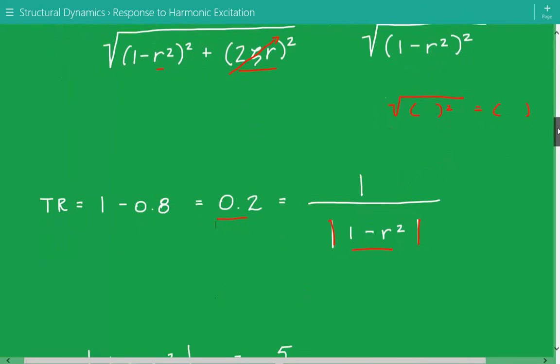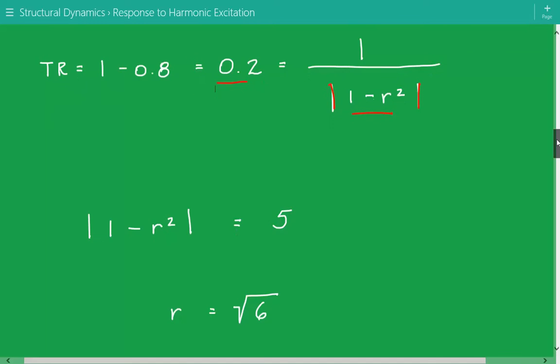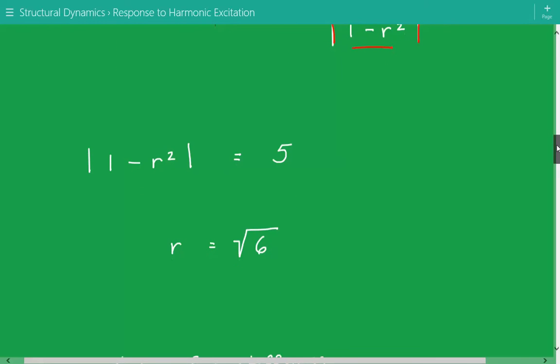So now we need to solve for r, and so what we get is the absolute value of 1 minus r squared equals 5. So r equals the square root of 6.